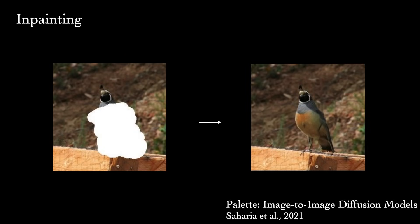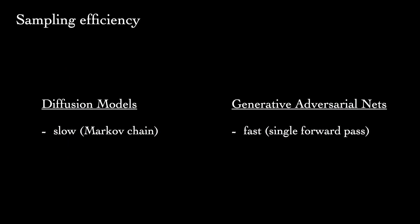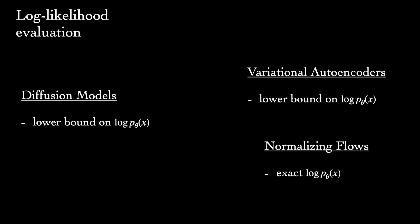We can compare diffusion models to some other prominent deep generative models. For sampling tasks, diffusion models are somewhat limited by the slow Markov chain. This contrasts, for example, with GANs, which can generate images in a single forward pass. Ongoing work aims to speed up sampling in diffusion models. As we saw earlier, diffusion models allow us to calculate a variational lower bound on the log likelihood, similar to VAEs. In practice, this lower bound can be quite good, and even competitive on density estimation benchmarks, which have long been dominated by auto-aggressive models.